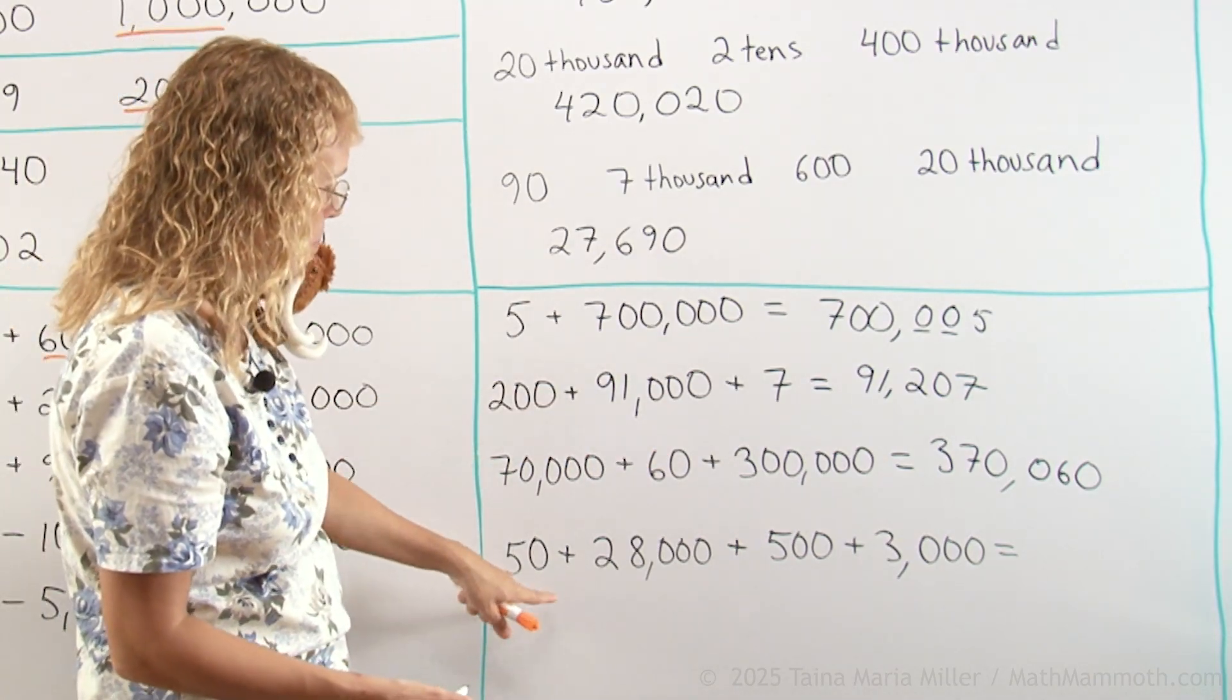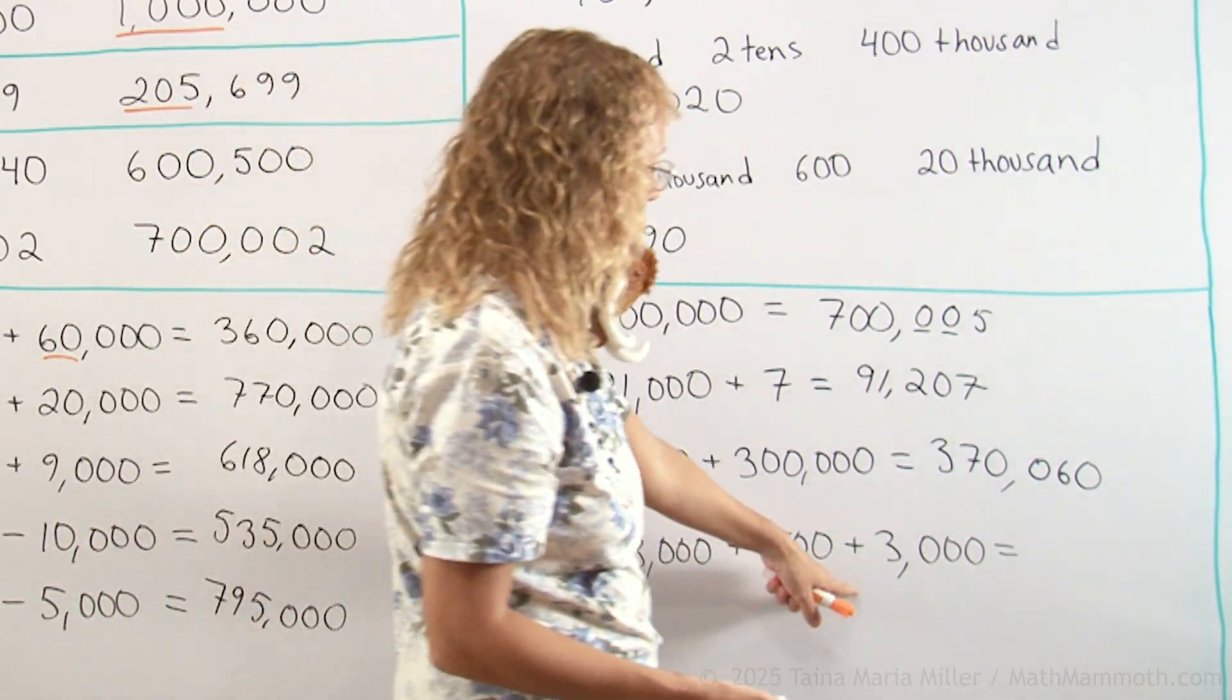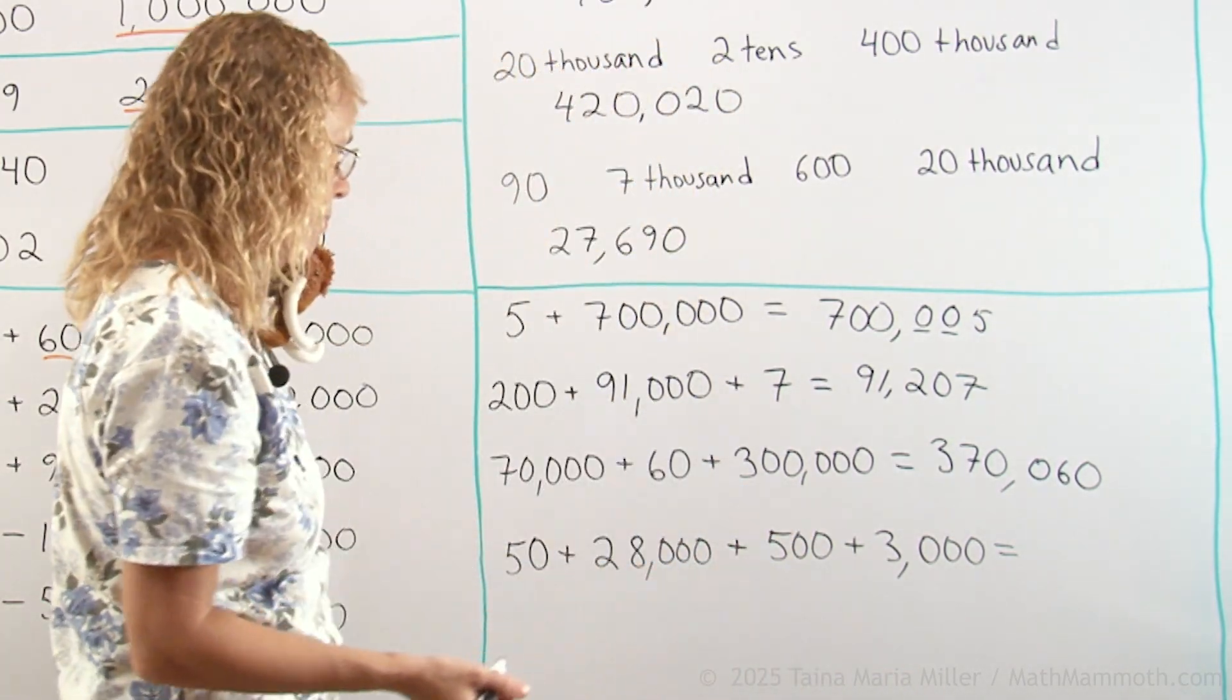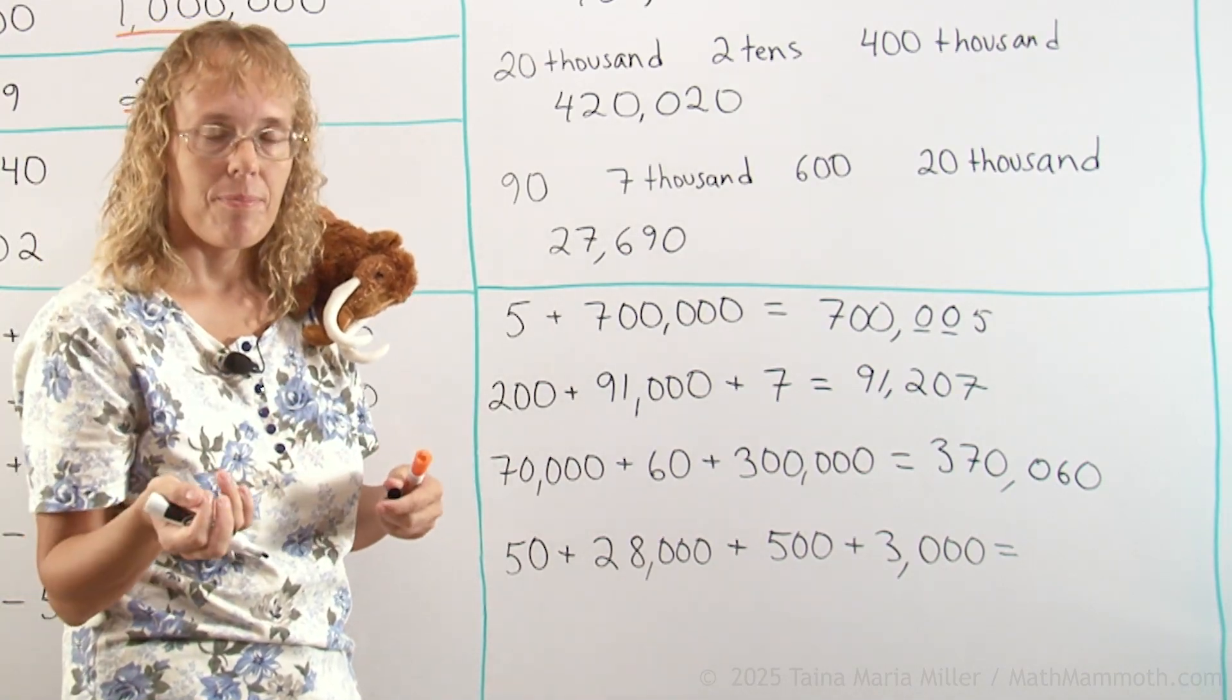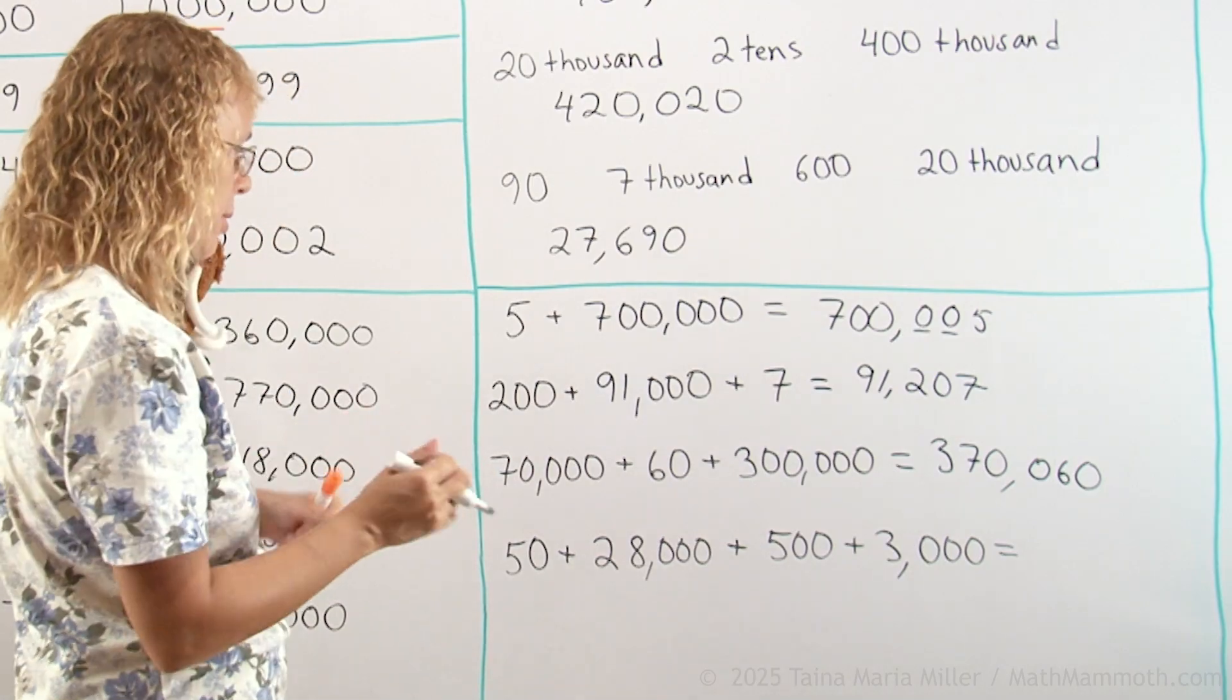Lastly, fifty plus twenty-eight-thousand plus five-hundred plus three-thousand. I'll add the thousands first. Twenty-eight plus three. Thirty-one. And those are the thousands. Thirty-one-thousand.